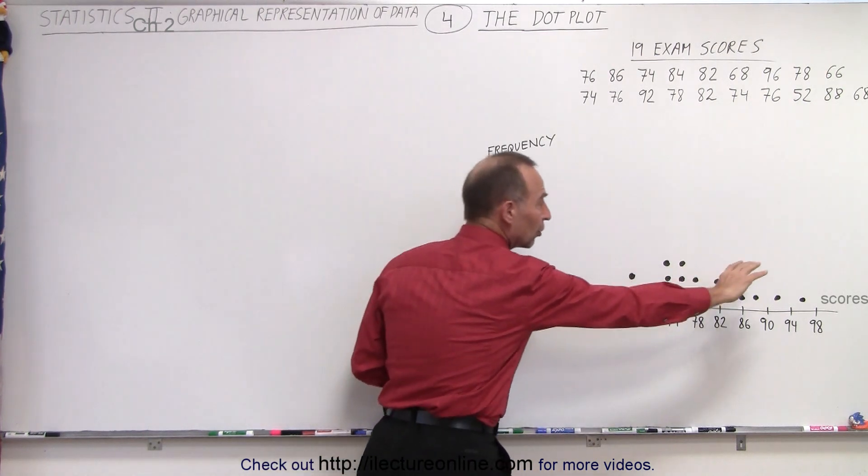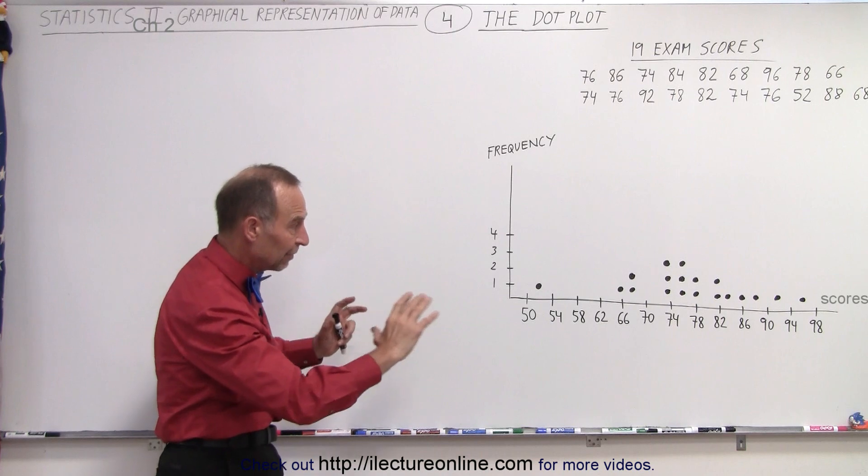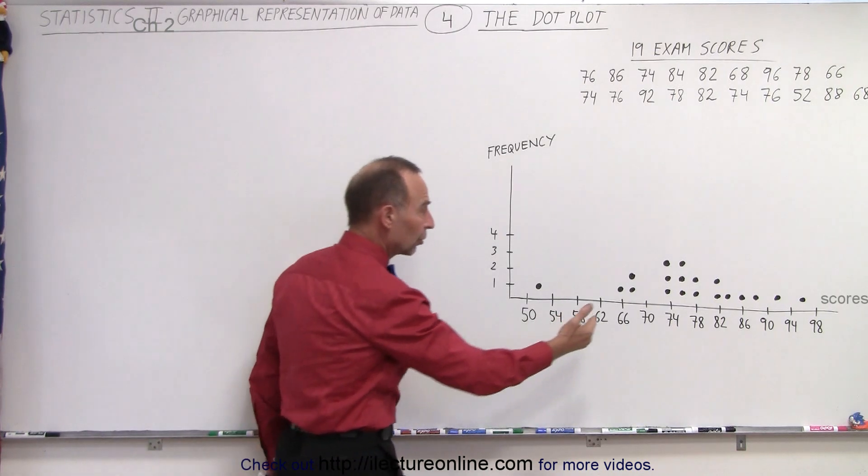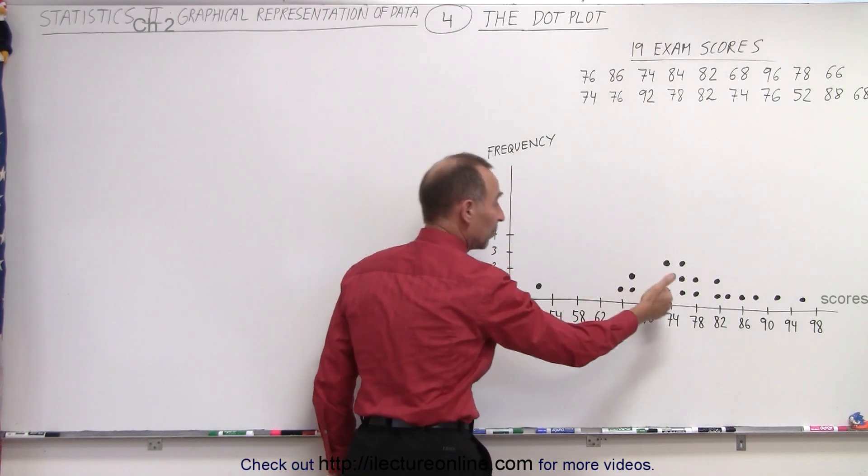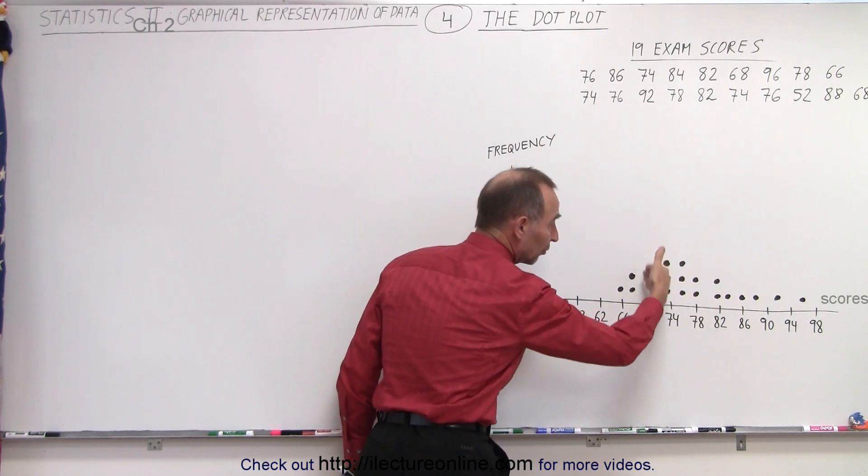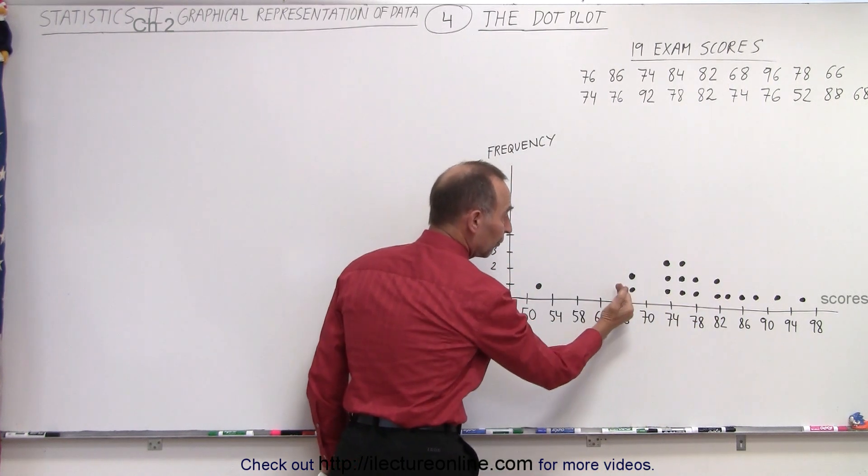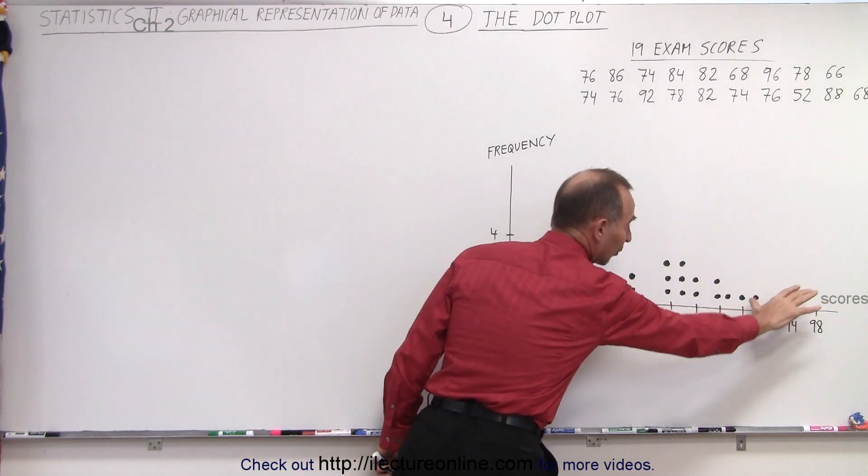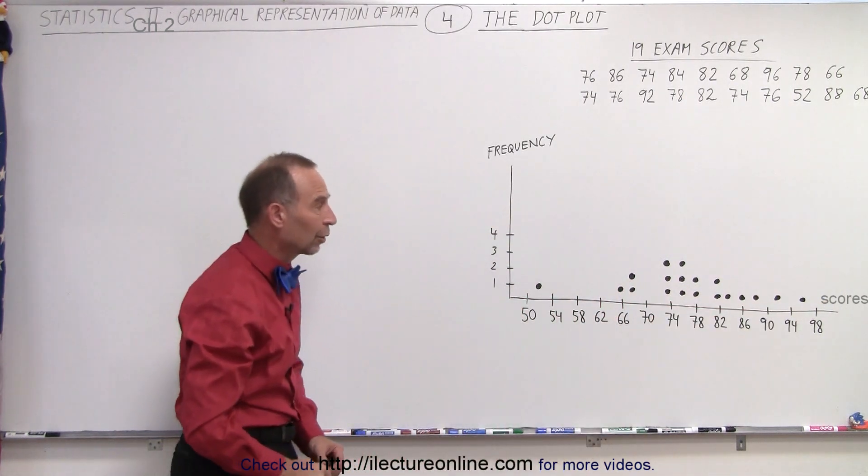And you can see where the grades kind of fall. This gives you a bit of an idea that the majority of the grades, presumably from a test, fall within the 74 to 78 range right here. A few that are down here, a few that are here, and then of course very few in the very high grade category.